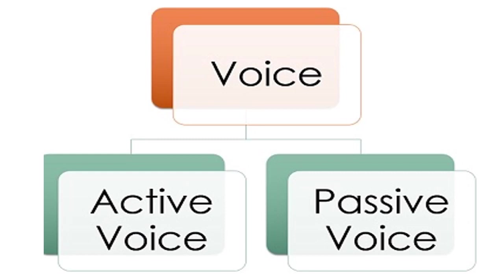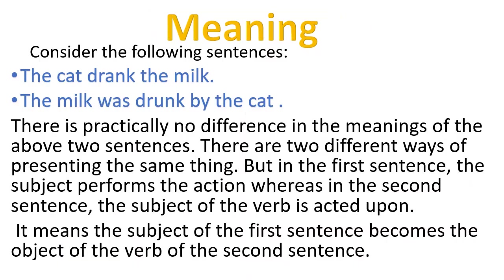Voice is divided into two types: active voice and passive voice. Consider the following sentences: 'The cat drank the milk' and 'The milk was drunk by the cat.' There is practically no difference in the meaning of the above two sentences. These are two different ways of presenting the same thing — the meaning of both sentences is the same.